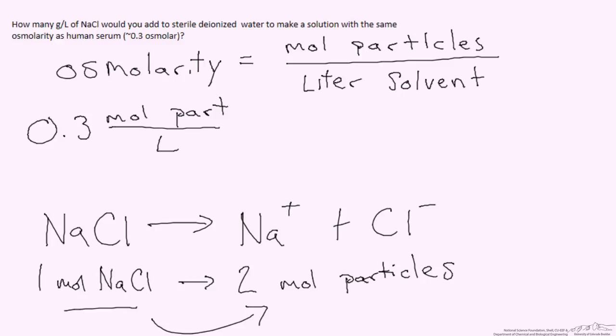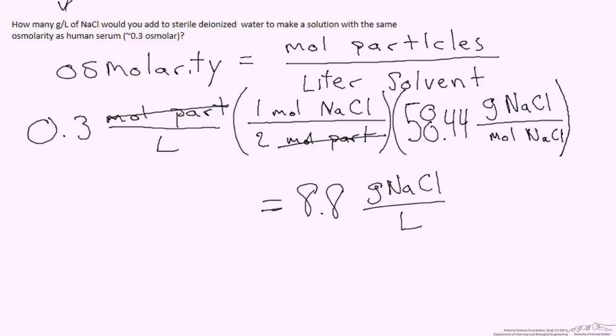So if we use this information and incorporate that back to our original calculation we have 0.3 moles of particles per liter in blood, which we want to translate to 0.3 moles of particles of sodium and chloride ions per liter in this solution that we're making up. So we need to then convert these moles of particles into moles of sodium chloride so we can eventually calculate how many grams of sodium chloride we actually have. From here all we have to do is use our conversion factor that we determined. And then finally we have moles of sodium chloride and it's the basic concept of just converting that into grams of sodium chloride and we have our solution. And that gives us 8.8 grams of sodium chloride per liter of deionized water.